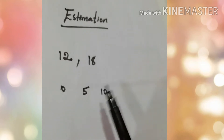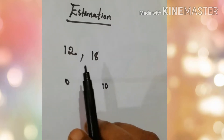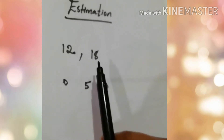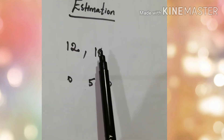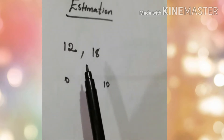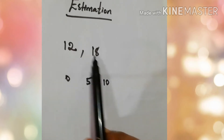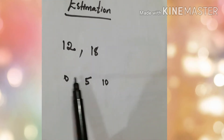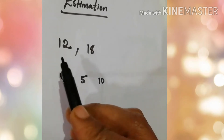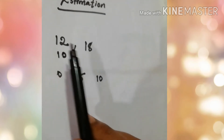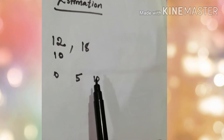I will explain estimation with some simple examples. Here we have two numbers, 12 and 18. Let's see how we can estimate these numbers to the nearest zero. These are two-digit numbers, so we need to estimate them to two-digit numbers only. What we need to do is first check the last digit. Here it is 2. Two is between zero and five, so we need to estimate this number to 10.